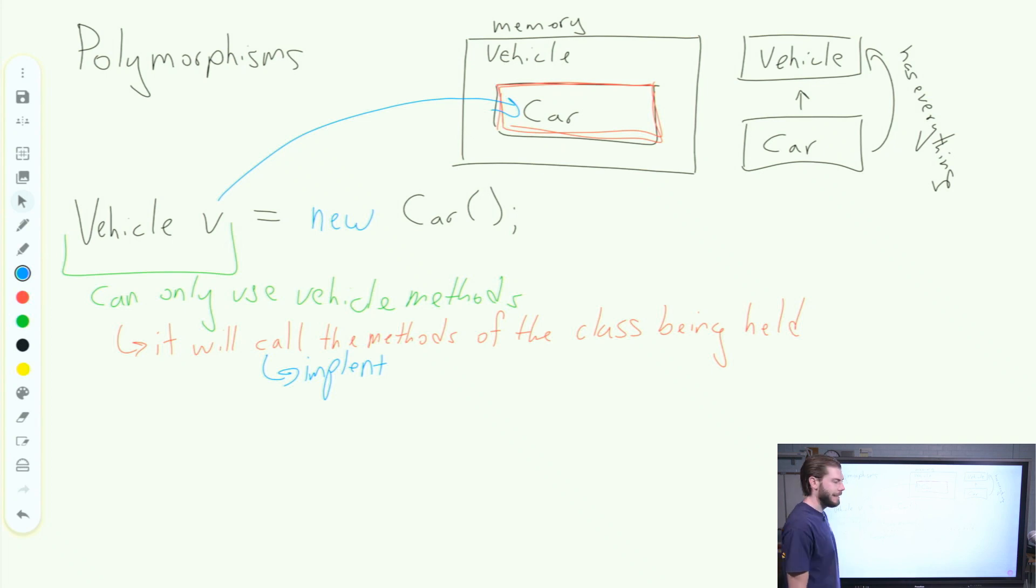So this is really cool, because it allows us to create broad objects, broad object definitions and class definitions, and then use more specific classes, like the car, that have more specific behaviors, even using those broad definitions that we created for our general class. And this is the basis of polymorphism. We have one class that can do many different things because we have these child classes that have lots of different behaviors.